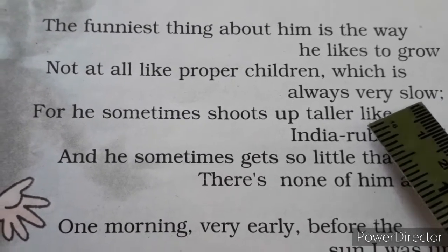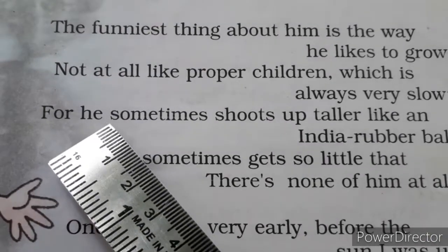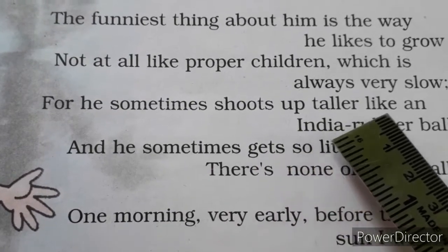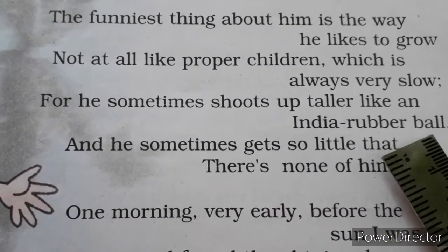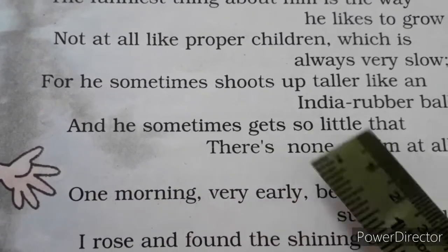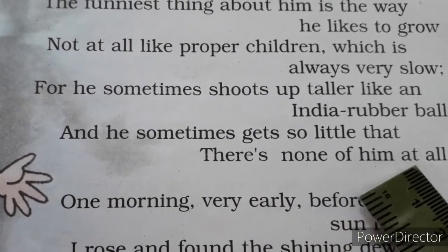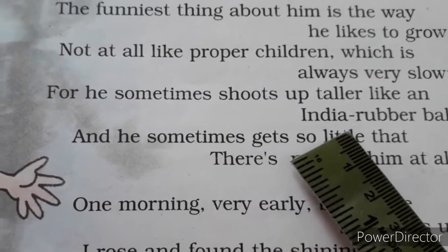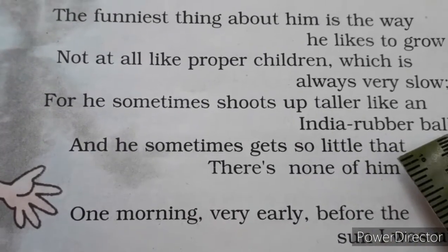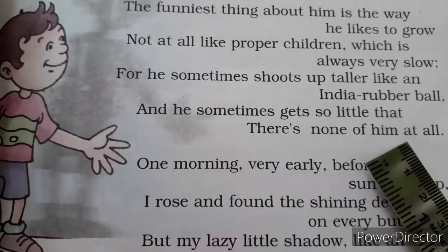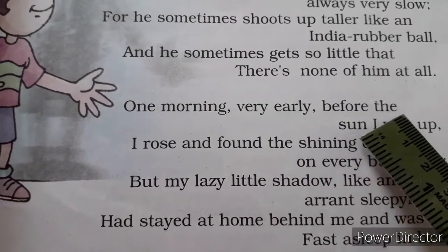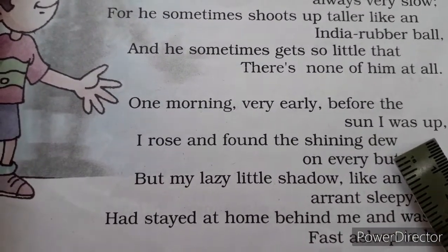Shadow parchhai kaisi hoti hai — woh jaldi jaldi badi hoti jati hai. For he sometimes shoots up taller like an Indian rubber ball, and he sometimes gets so little that there's none of him at all. Kabhi kabhi bahut badi ho jati hai jaise rubber ball, aur kabhi kabhi toh dikhti tak nahi hai.